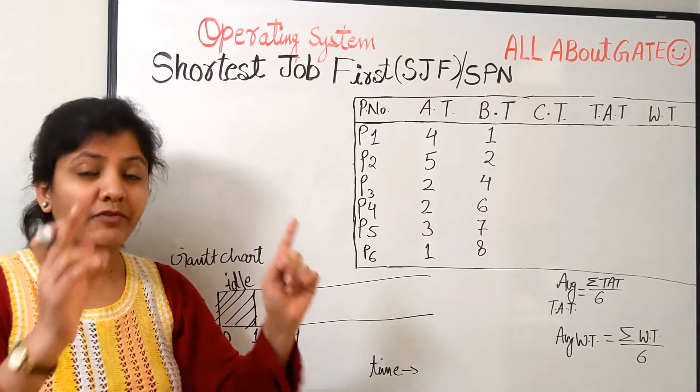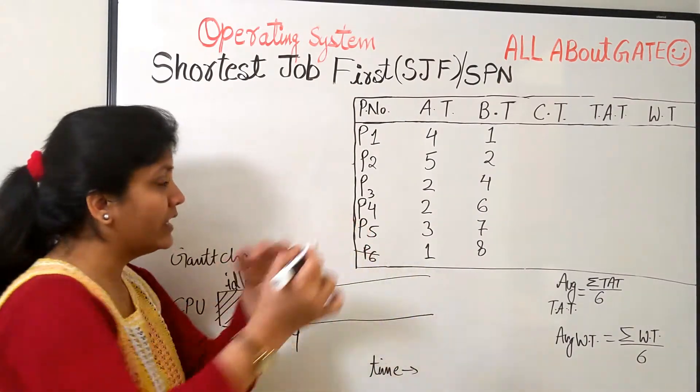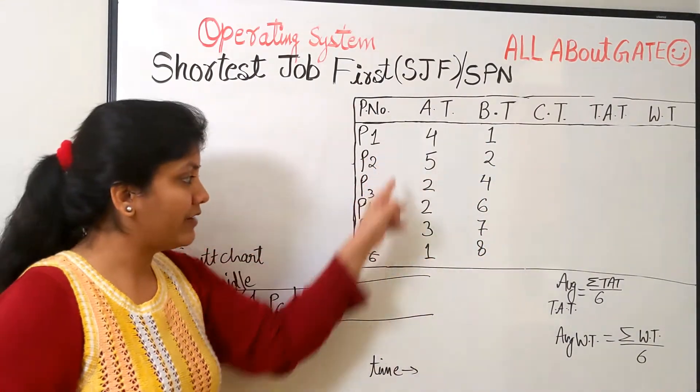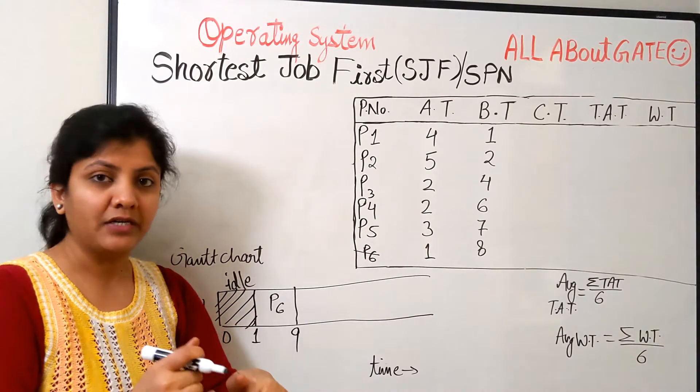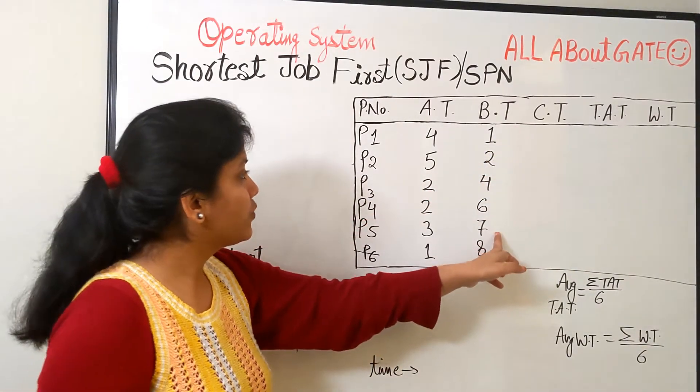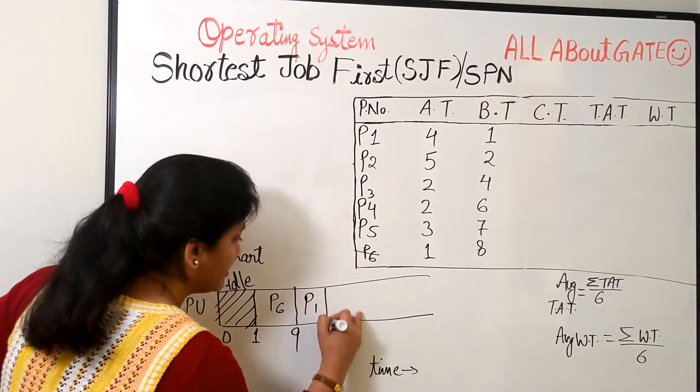Because you have each and every process in your ready queue available, so this one is done actually. Then you just have to look at the burst time. Don't look at the arrival time because all of them have arrived. So look at the burst time, whichever is the smaller will get the chance first. So what is the smaller one? Burst time 1. So P1 gets the chance first.